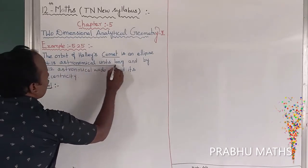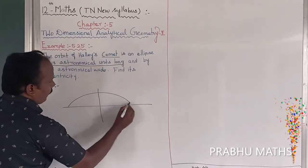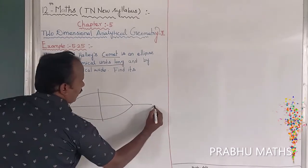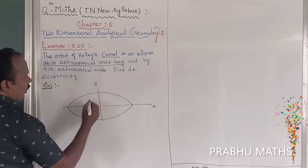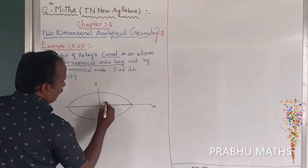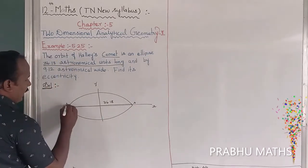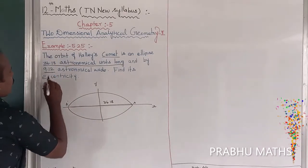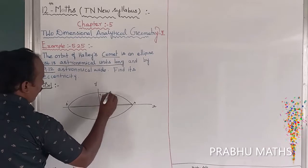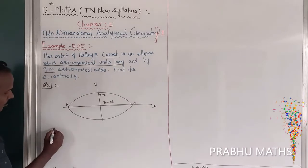The orbit is 36.18 astronomical units long. Drawing the ellipse with x and y axes. The major axis (the long dimension) is 36.18, labeled as 2a. The width (minor axis) is the shorter dimension — that distance is 9.12, which is 2b.